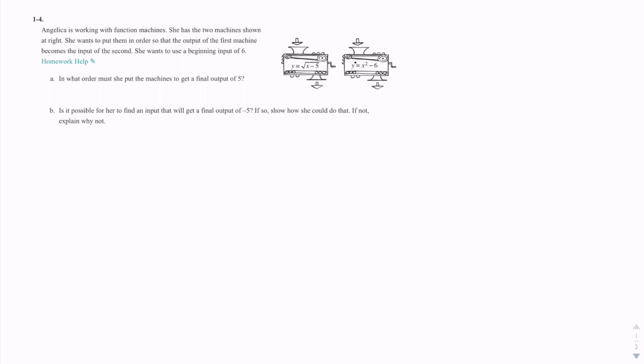Okay, so in question 4, they're giving us two function machines. The first one is y equals the square root of x minus 5, and the second one is y equals x squared minus 6.